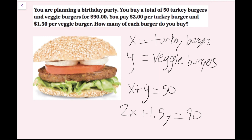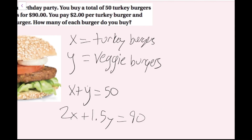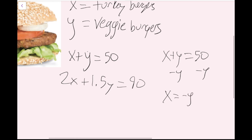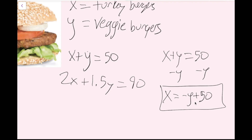This is the step where I need to isolate a variable. In the top equation, both variables do not have coefficients — their coefficient is 1 — so it's going to be easier to solve for. This time I'm going to solve for x. I'll rewrite the equation: x plus y equals 50. To solve for x, I'm just going to subtract y on both sides, so I get x equals negative y plus 50. Then I'm going to plug this value for x into the x in the other equation.